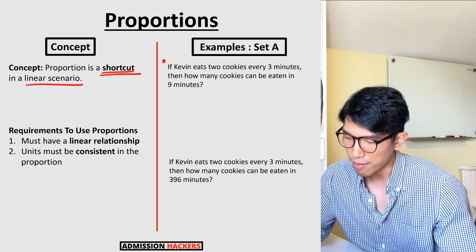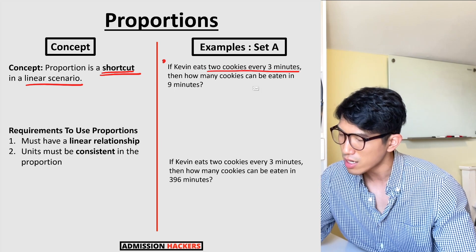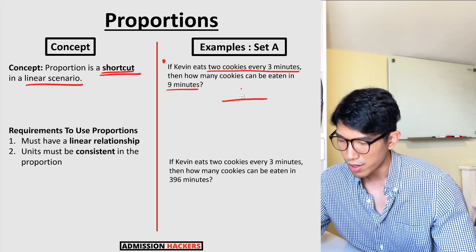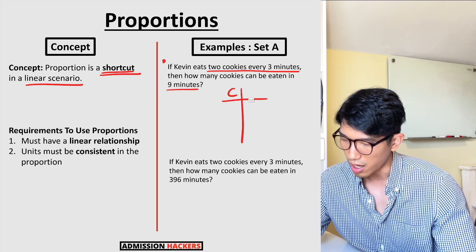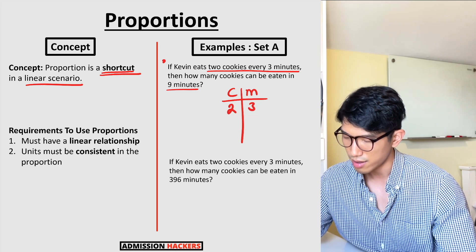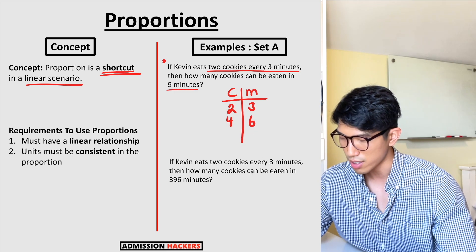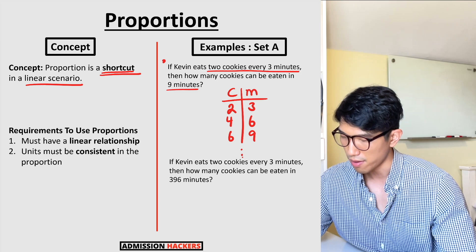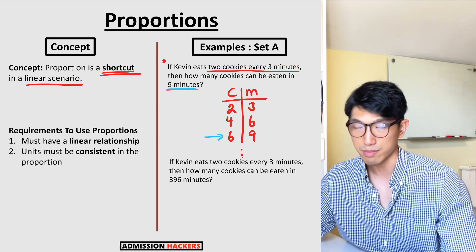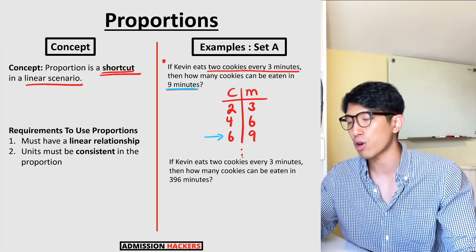First example: if Kevin eats two cookies every three minutes, how many cookies can he eat in nine minutes? We can make a quick table — cookies and time in minutes. He eats two cookies every three minutes, four cookies every six minutes, six cookies every nine minutes. The answer is six pieces. The numbers are small enough that we didn't really need a shortcut or proportion here.